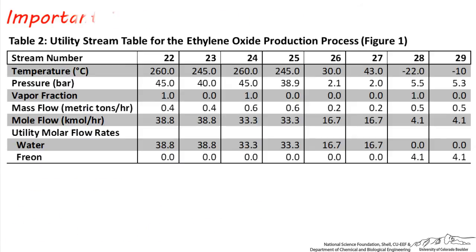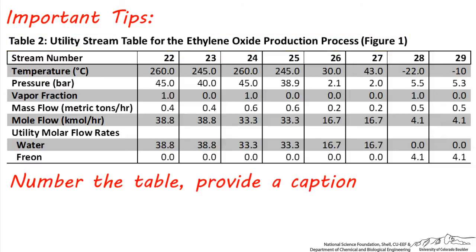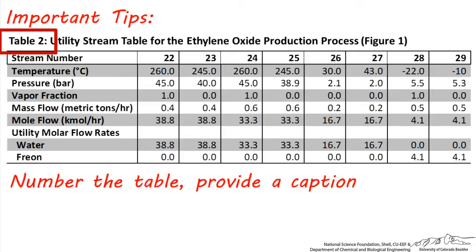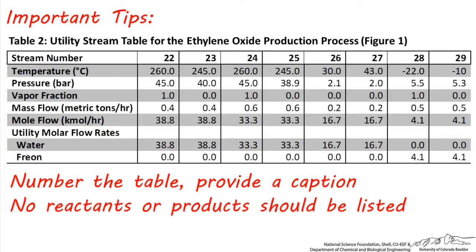Let's next talk about some things to keep in mind when setting up a utility stream table. Be sure to label and number your utility stream table as a separate table. Provide a brief description and reference the process flow diagram where the stream numbers are shown. Notice this table is labeled Table 2, because Table 1 is the stream table. Utility stream tables only present the utilities in the process, and all of the other components, such as reactants, intermediates, and products, are not listed.